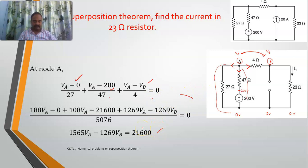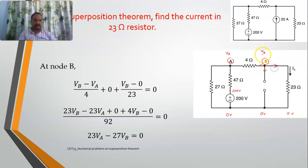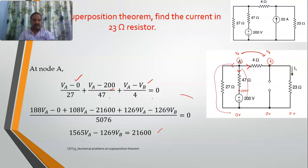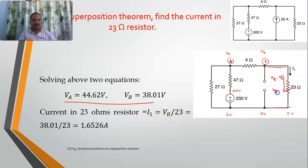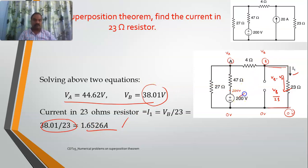Solving node A gives the first equation. At node B, there are three paths: vb minus va divided by 4, plus an open circuit giving 0 current, plus vb minus 0 divided by 23, giving the second equation. Solving these two equations gives va and vb. The current in the 23 ohm resistor is vb divided by 23. With vb equal to 38.01, we get i1 equal to 1.6526 amperes in the downward direction, due to the 200 volt voltage source.